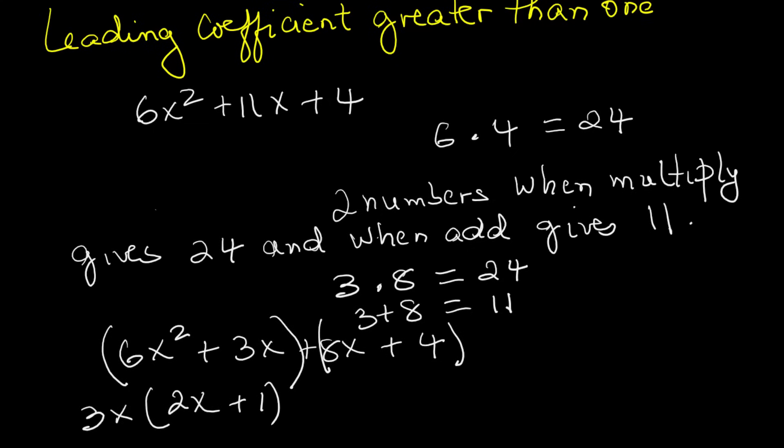Factor each group. 3x times 2x plus 1 and 4 times 2x plus 1. Finally, factor out the common binomial. 3x plus 4 times 2x plus 1. And that is your factored form.